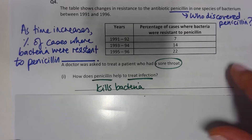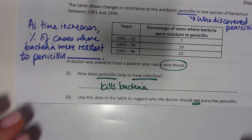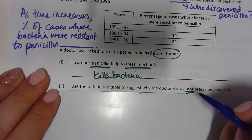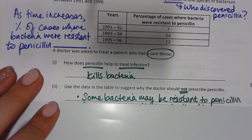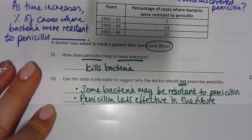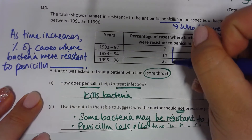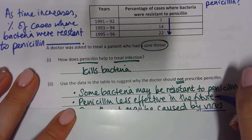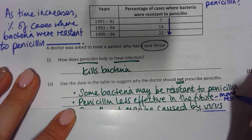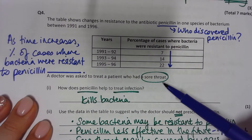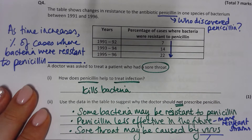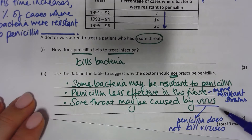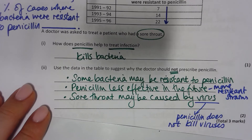A doctor was asked to treat a patient with a sore throat. How does penicillin treat infection? It kills bacteria — it is a type of antibiotic. Use the data to suggest why the doctor should not prescribe penicillin: some bacteria could be resistant to penicillin, making it less effective in the future as there are more and more resistant strains. Also, the patient only has a sore throat — it might not be caused by bacteria; it could be caused by a virus, and penicillin does not kill viruses.